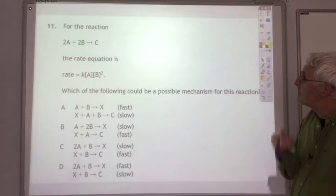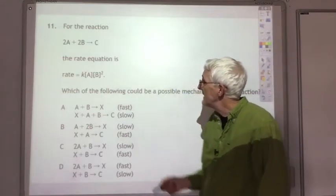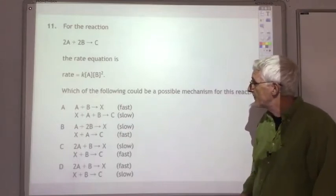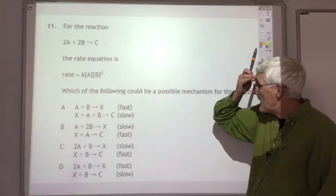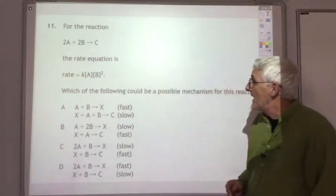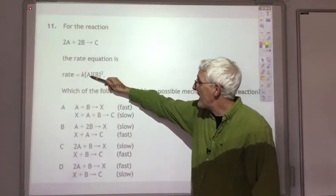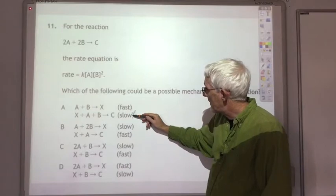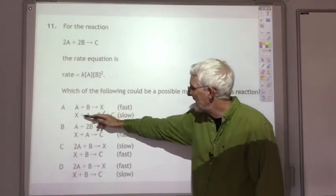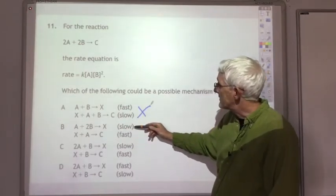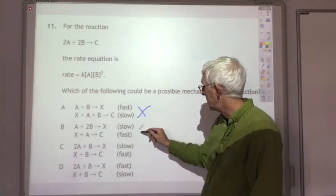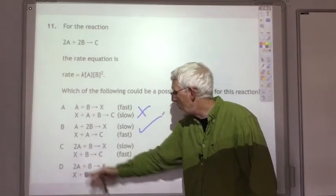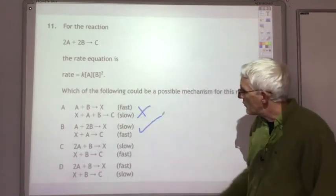Here's a past paper question: for the reaction 2A + 2B → C, the rate equation is k[A][B]². Which of the following could be a possible mechanism? The rate equation tells us that in the slow step, one molecule of A reacts with two molecules of B. Option A has the slow step with one A and one B — not right. Option B has the slow step with one A and two B — correct. Options C and D both have two molecules of A in the slow step, which would give A² in the rate equation. So the answer must be B.